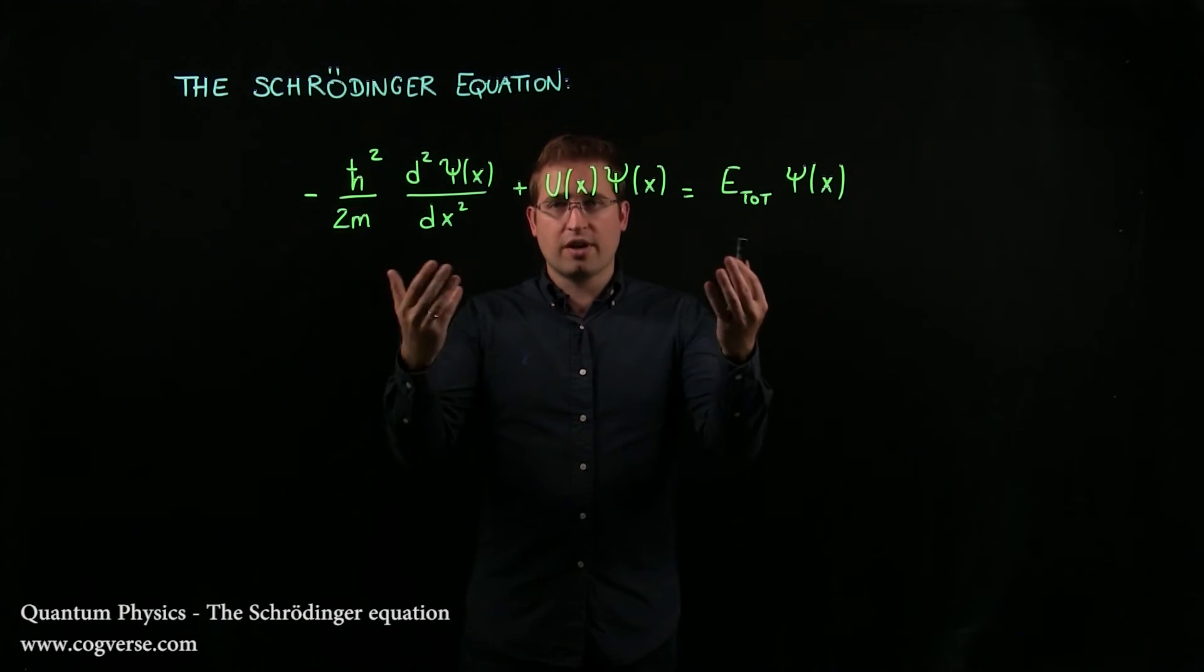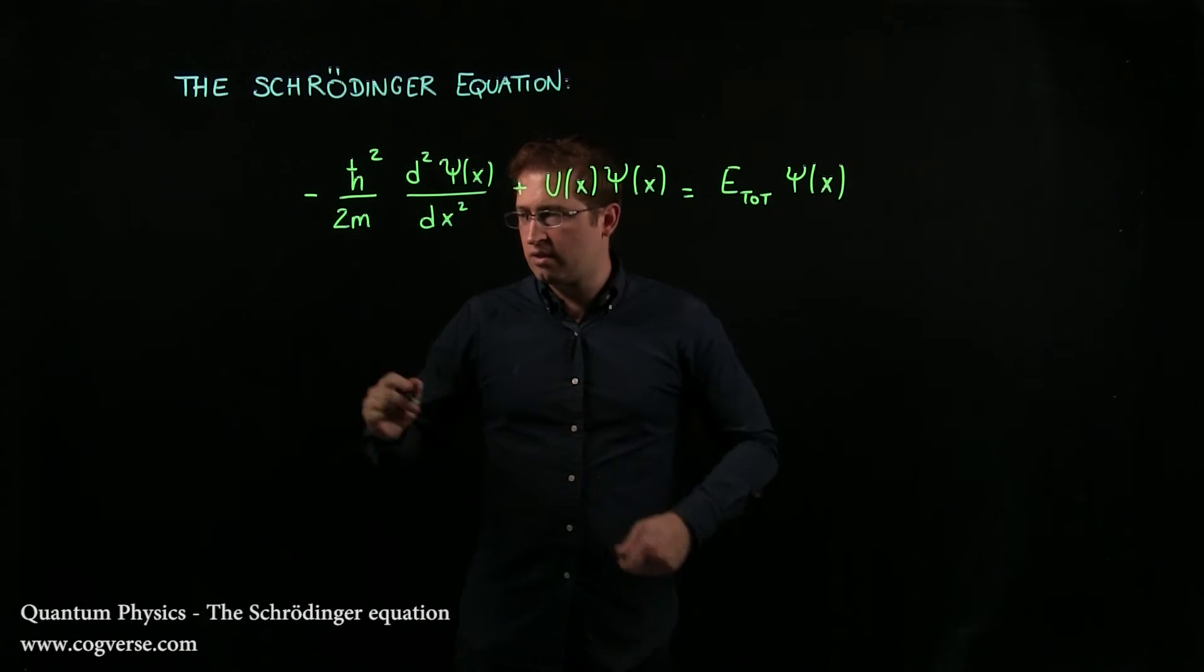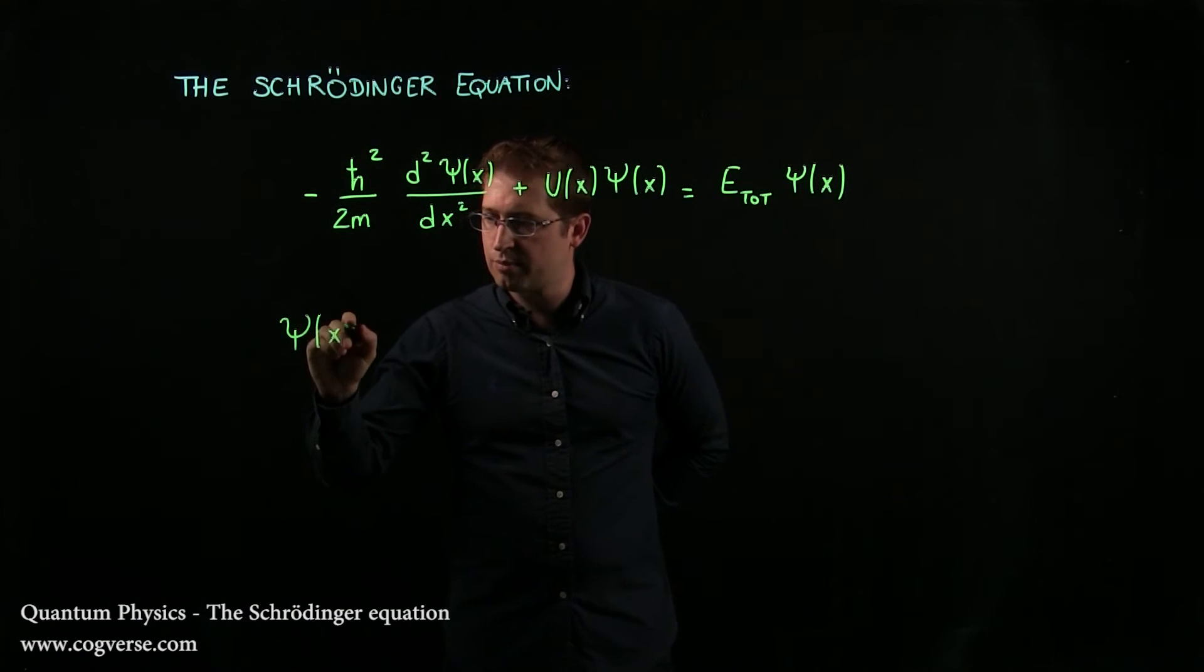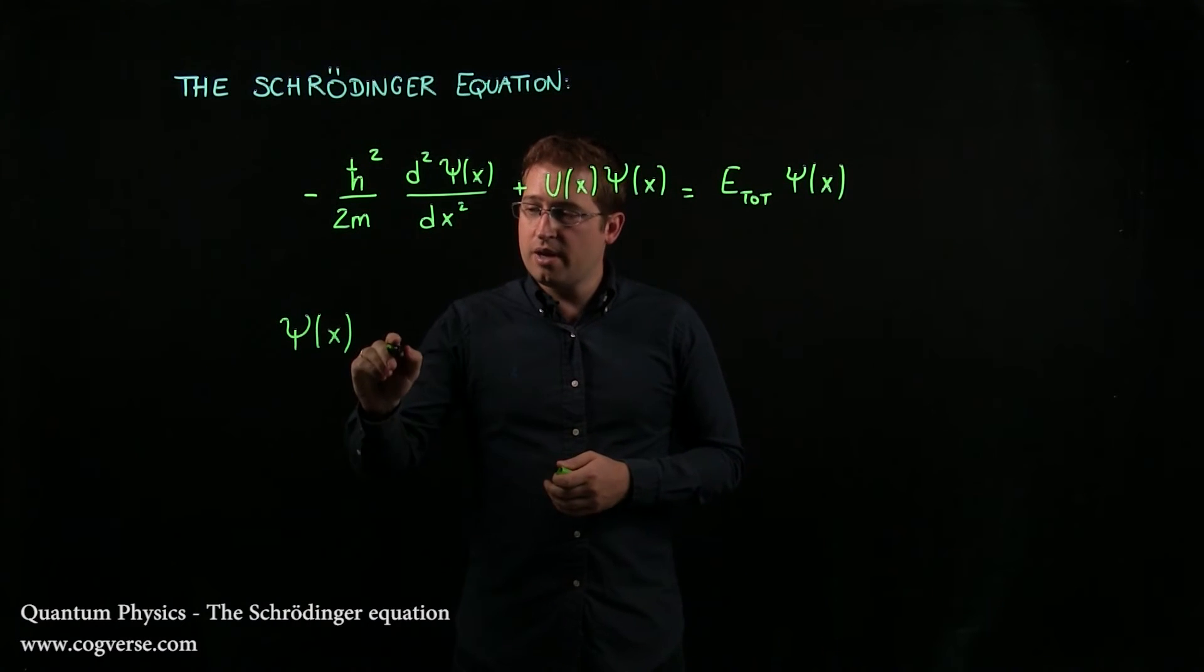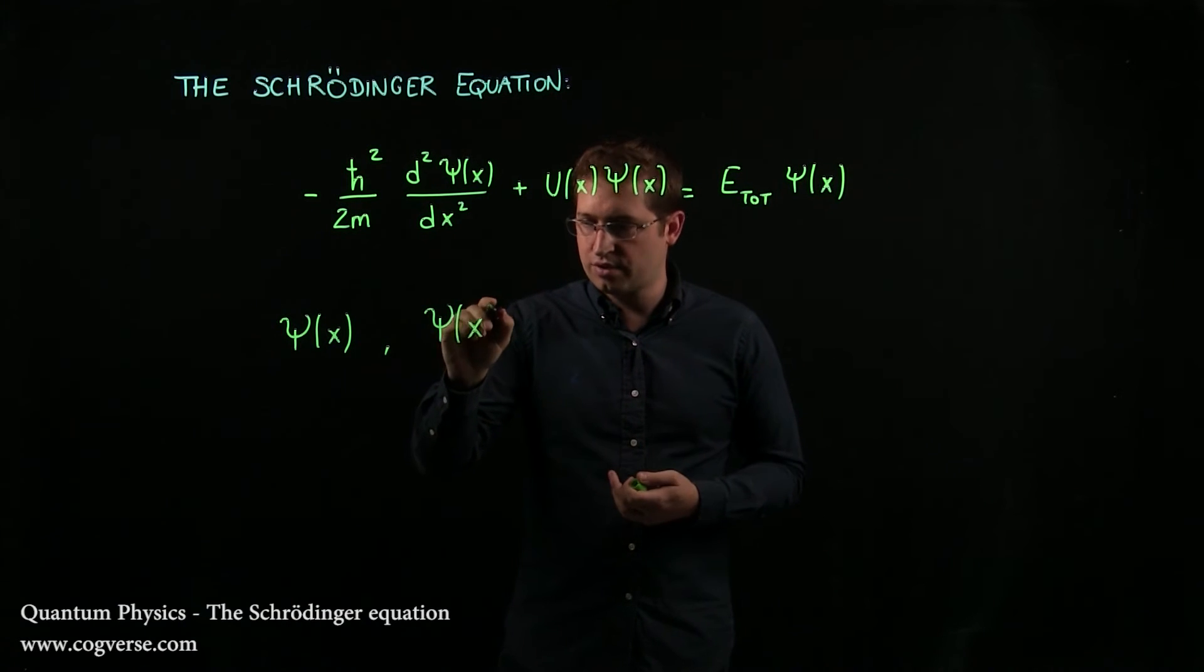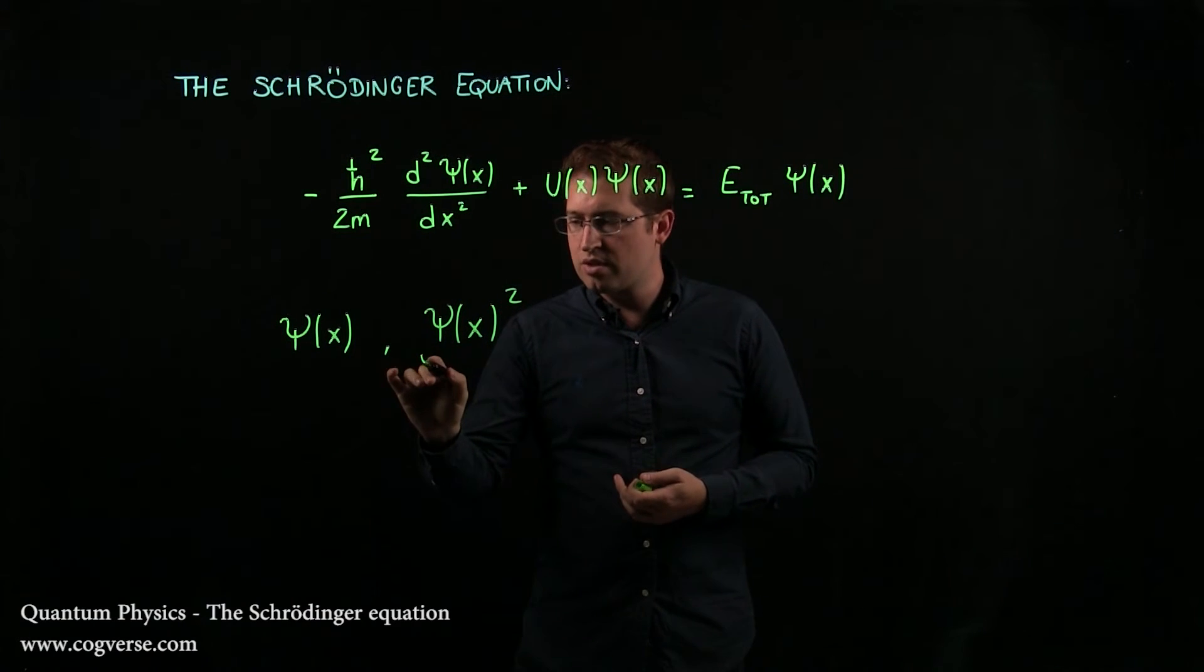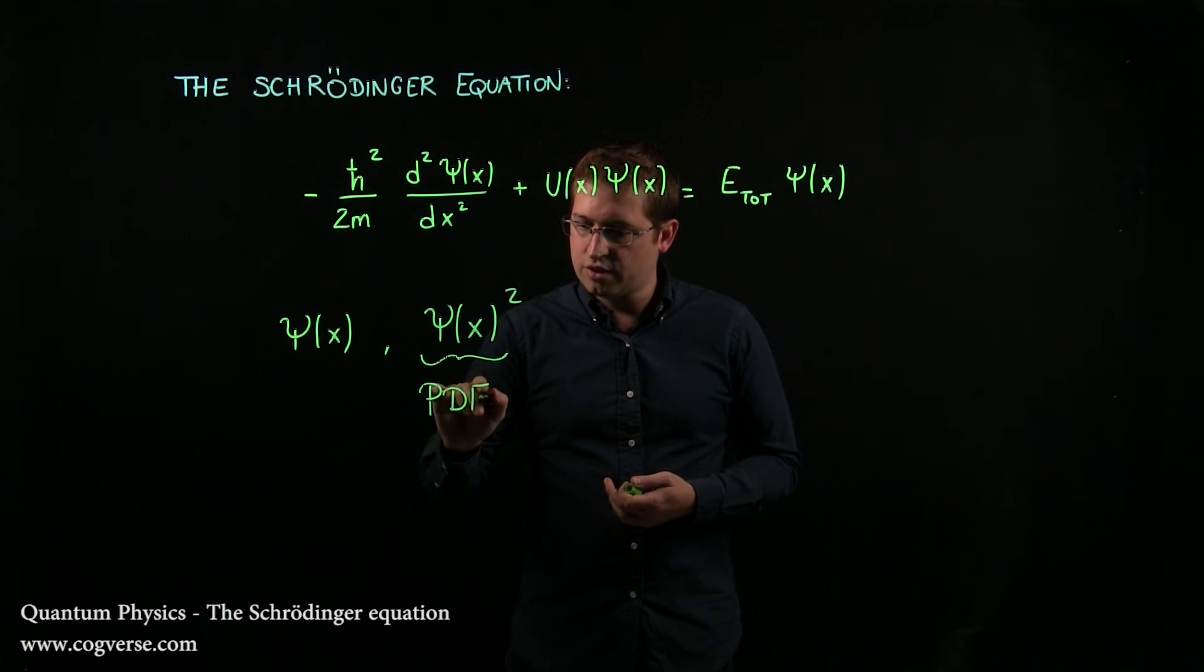And if we can find the solutions to this equation, then we get wave functions, ψ(x), that are the best possible description of the quantum state of our physical system. But we also get ψ(x) squared. All you have to do is square it. And that is interesting because ψ² is a probability density function.